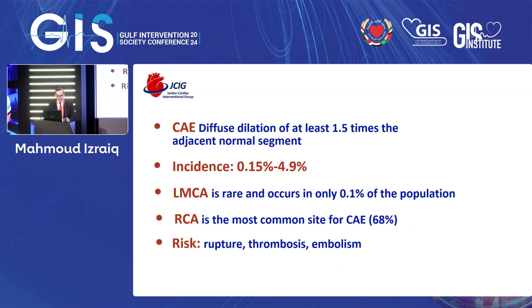The RCA is the most common site of coronary ectasia. The serious complications of coronary ectasia include rupture, thrombosis, and embolism.